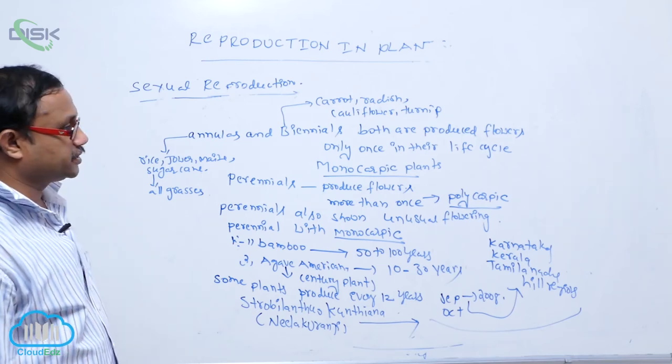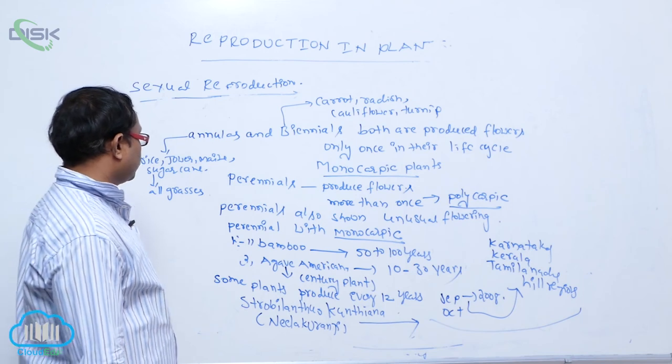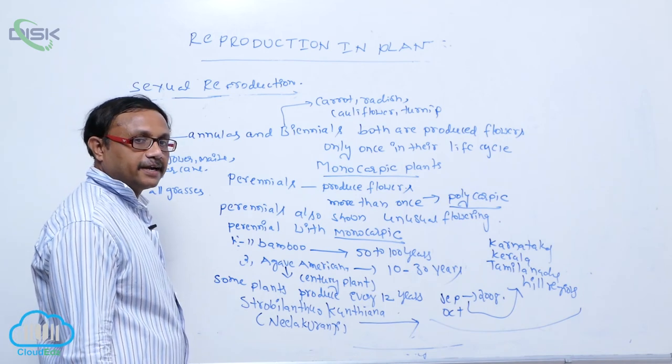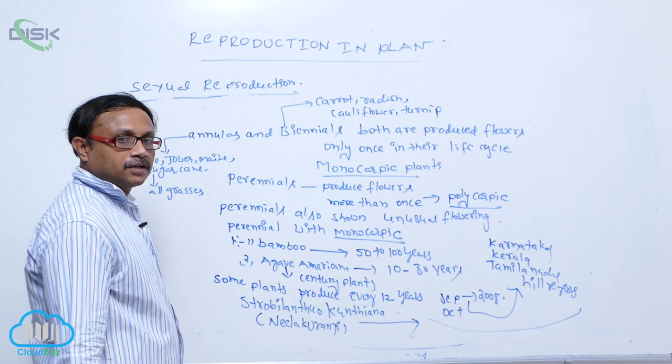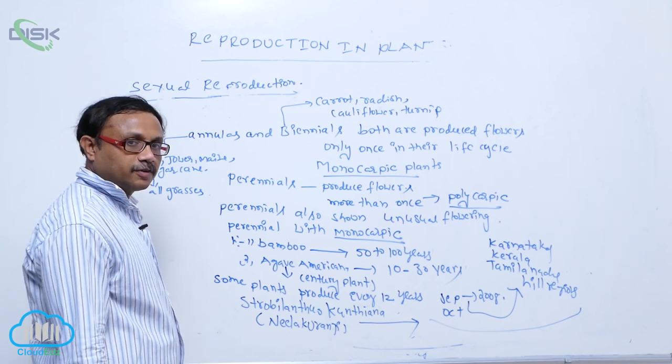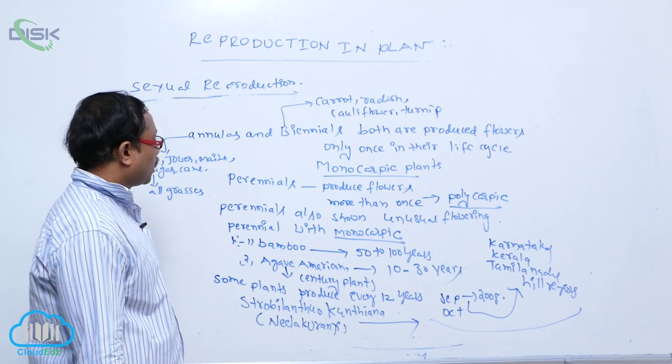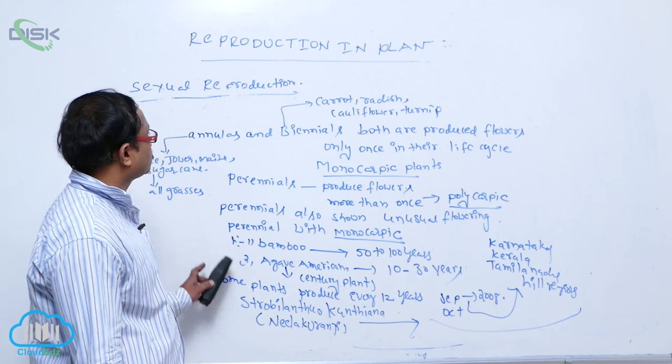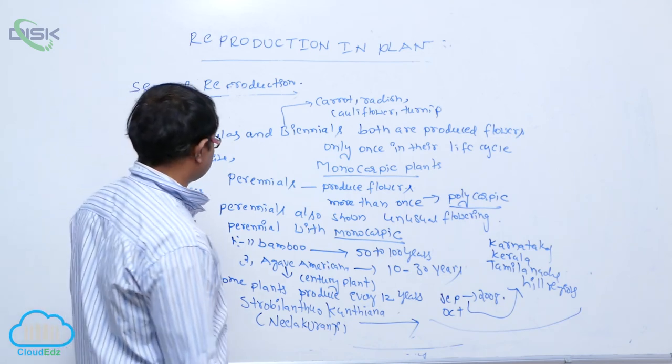Sexual reproduction is influenced by environmental factors and hormonal factors. Hormones and some environmental factors are involved in the sexual reproduction process.